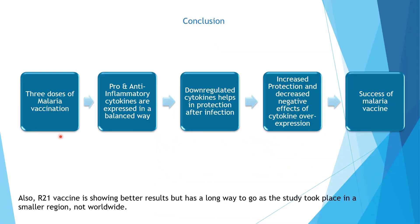To summarize: three doses of malaria vaccination result in pro- and anti-inflammatory cytokines being expressed in a balanced way. After the third dose, cytokine expression was down-regulated, which is crucial because cytokine overexpression in malaria infection is associated with malaria-related death and pathogenicity. When this is controlled, it results in increased protection and decreased negative effects of cytokine overexpression, contributing to the success of the malaria vaccine. We also want to mention the R21 vaccine as it is showing better results, but it still has a long way to go as the study took place in a smaller region and more work needs to be done.